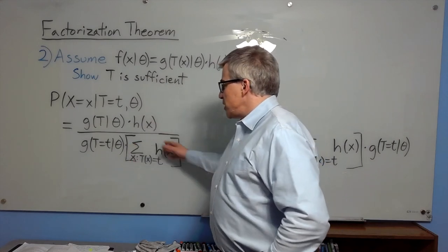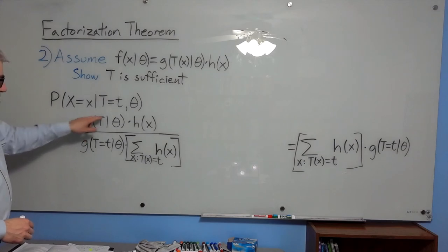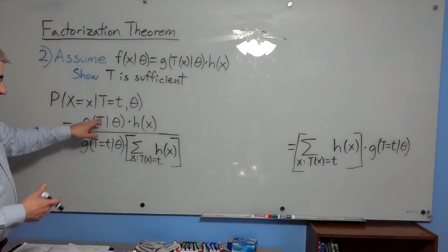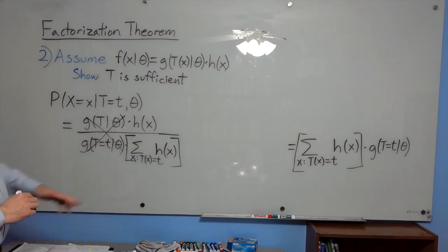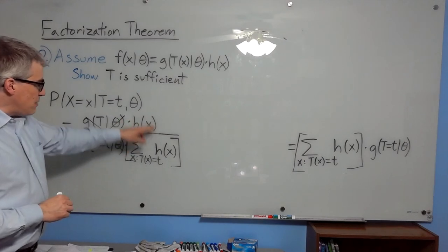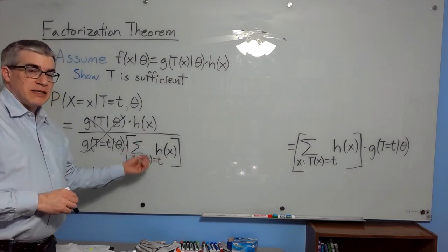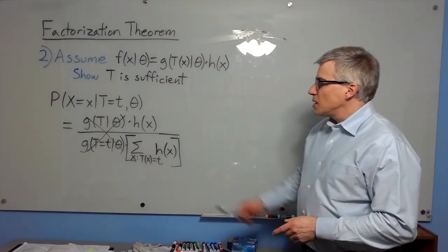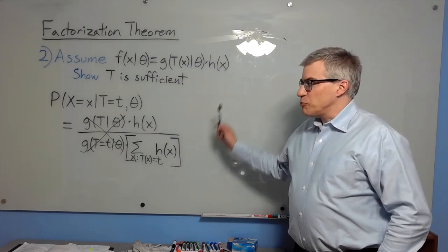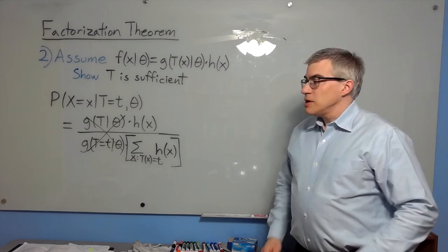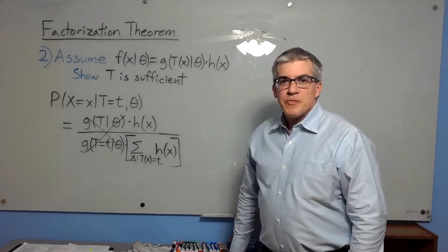Putting the pieces of the fraction together — numerator over denominator — the g of t given theta terms appear in both and cancel out, leaving an expression with no thetas in it. That expression is free of theta, which is the definition of being a sufficient statistic, and we've proven the discrete case. The continuous case is much the same with integrals instead of summations.